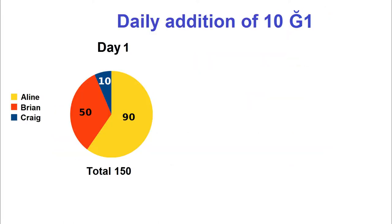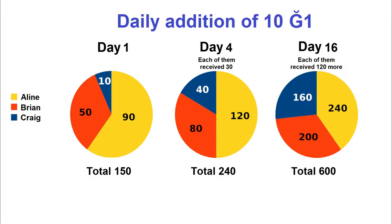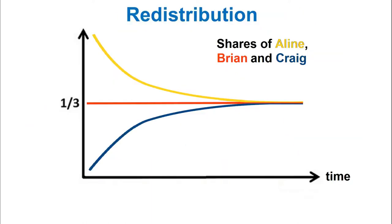Suppose three people own a total of 150 Junés, then receive 10 Junés every day and neither sell nor buy anything. Three days later each has received 30, and the shares have increased to 40, 80, and 120. The Junés actually come from nowhere — they appear on your account out of nothing, just like when a banker grants you credit in euros. Twelve days later everyone has received the same amount and the shares are much more balanced.